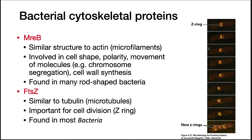Two important bacterial cytoskeletal proteins are common in bacteria. MreB has a similar structure to actin, which is found in microfilaments and is a protein in your muscles. It is involved in cell shape, polarity, movement of molecules such as chromosome separation, and cell wall synthesis. MreB is found in many rod-shaped bacteria. FtsZ is similar to tubulin, which is part of microtubules in eukaryotic cells. It is important for cell division, helping to form the Z-ring, which is found in most bacteria. On the right is an image of the Z-ring forming in a bacterial cell as it divides — an antibody against the Z-ring with a fluorescent compound attached has been added, and by shining UV light on the slide, the Z-ring fluoresces, showing where the cell divides.